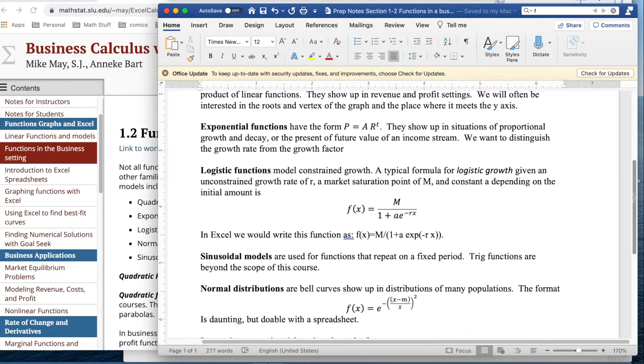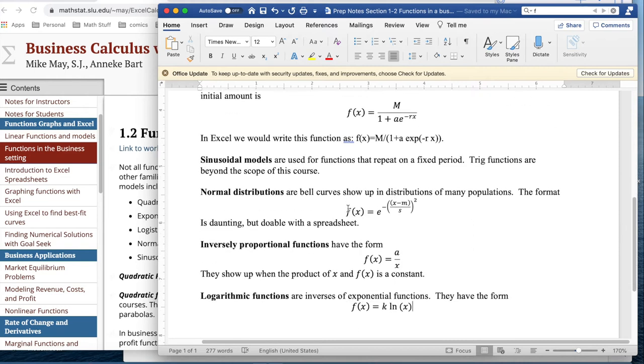A normal distribution is a function that's an ugly-looking function. f of x equals e to the minus quantity x minus m over s squared. It's daunting but doable with a spreadsheet, and there are lots of things that follow a normal distribution of Bell curve.